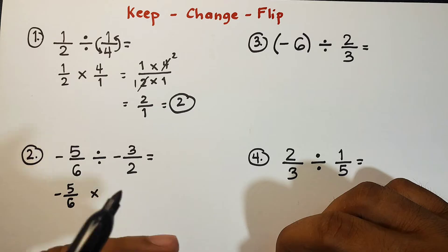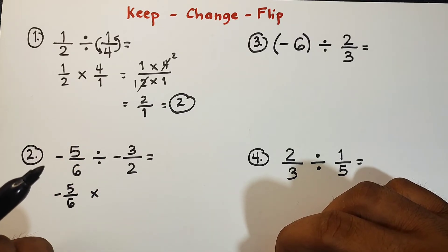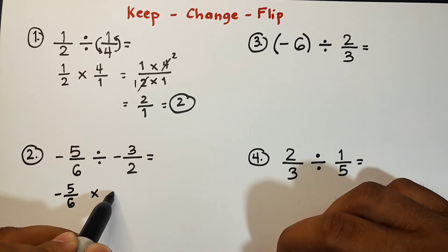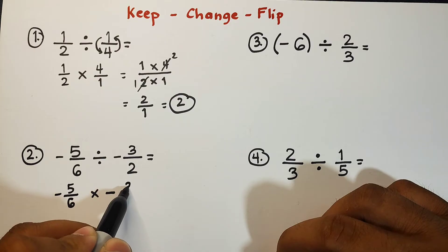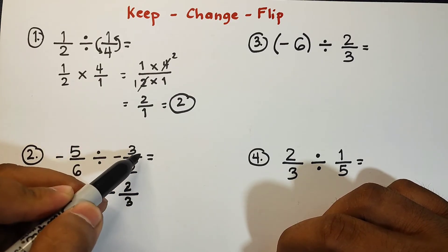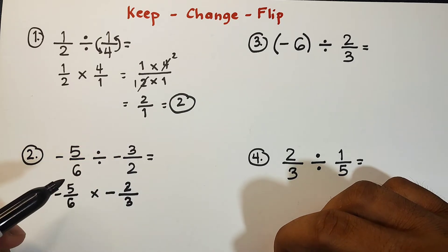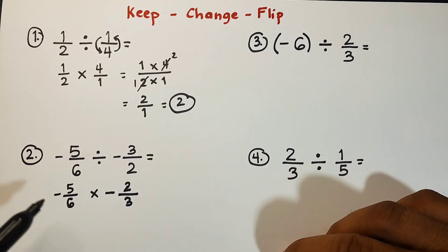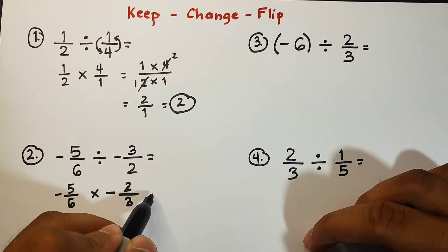Get the reciprocal of it or interchange the position of your numerator and denominator. This is negative three. Two over three. Again, you will interchange the position of your numerator and denominator. So now, let's proceed to multiplication.